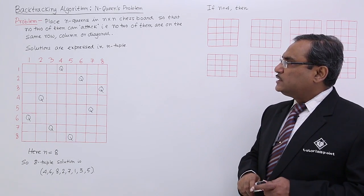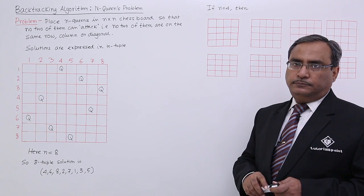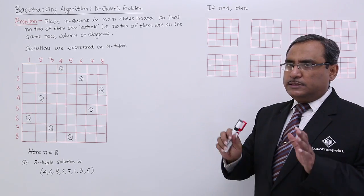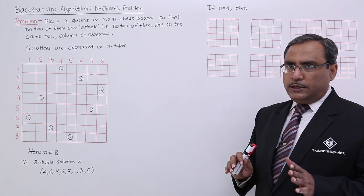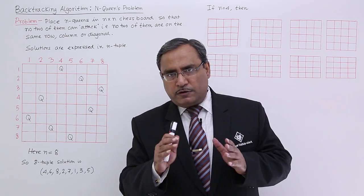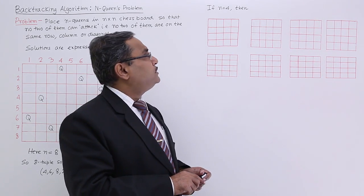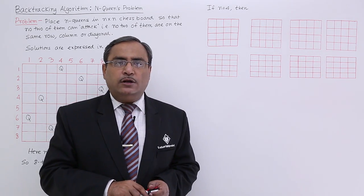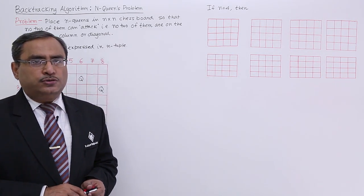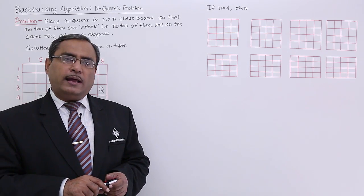Solutions are expressed as an N-tuple. Let me consider a smaller version of this problem where N is equal to 4. If N is equal to 4, then we will have a 4×4 chess board with 4 rows and 4 columns.